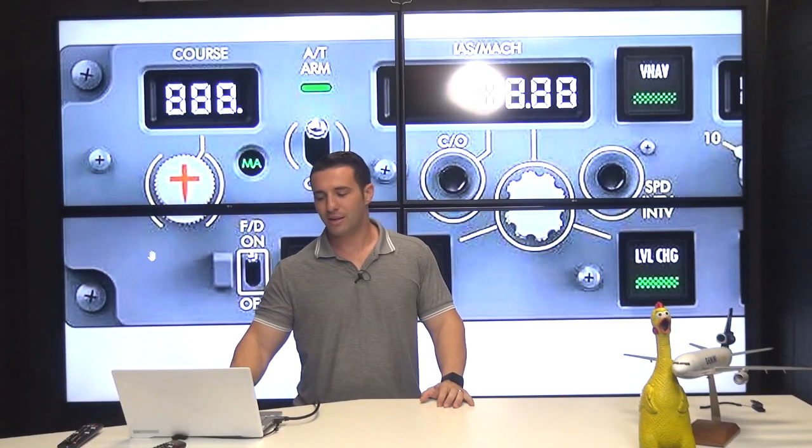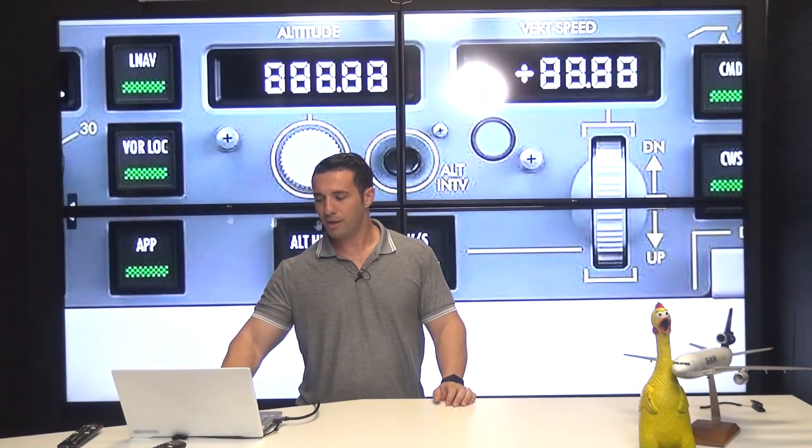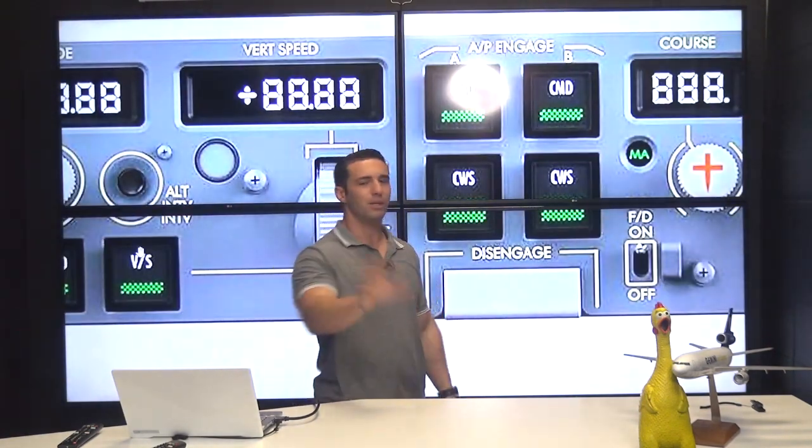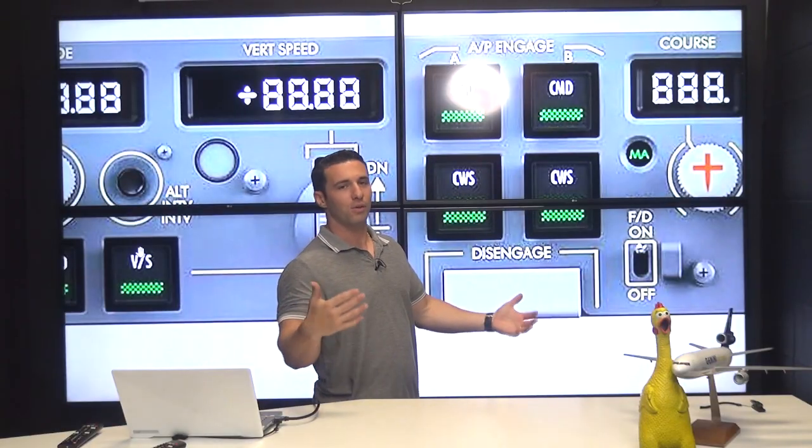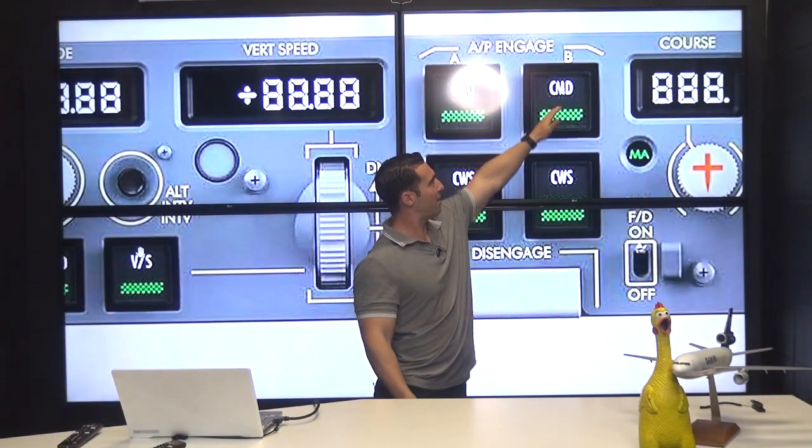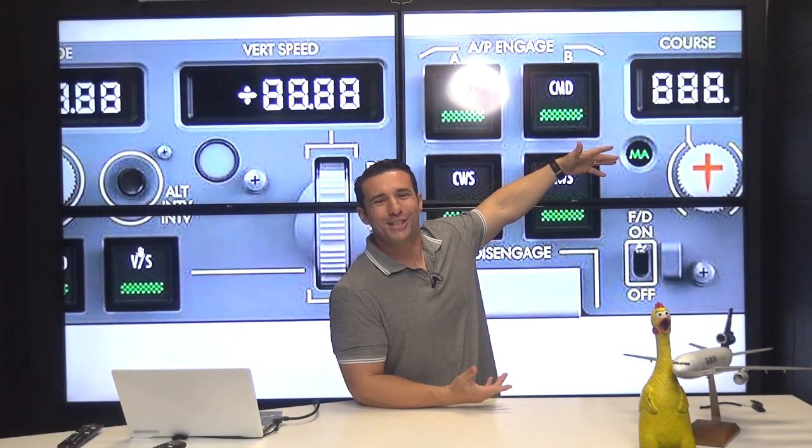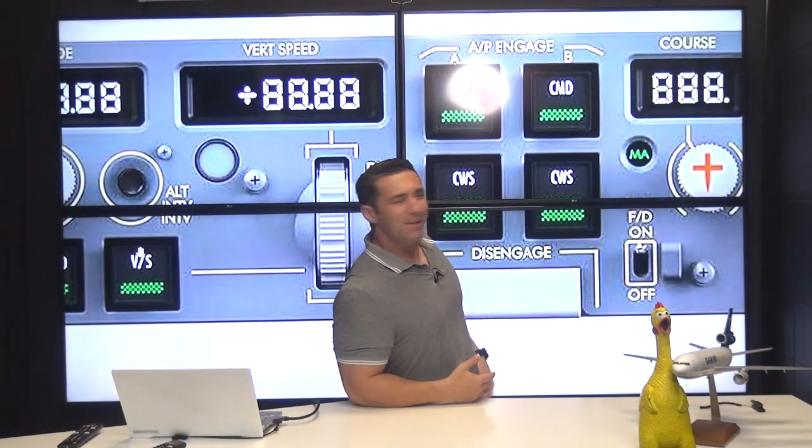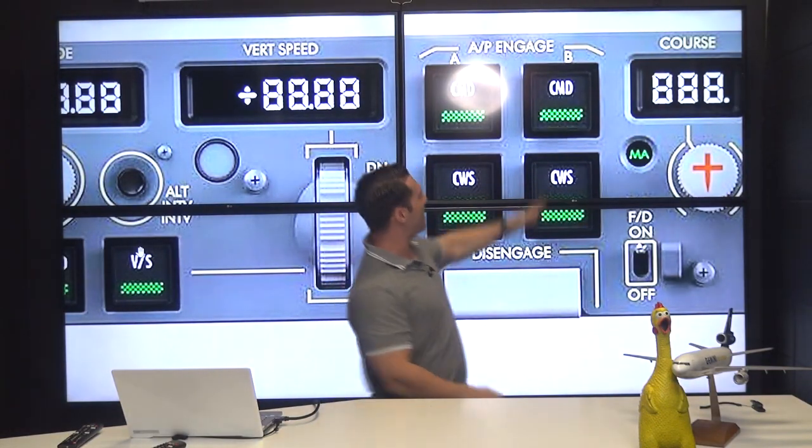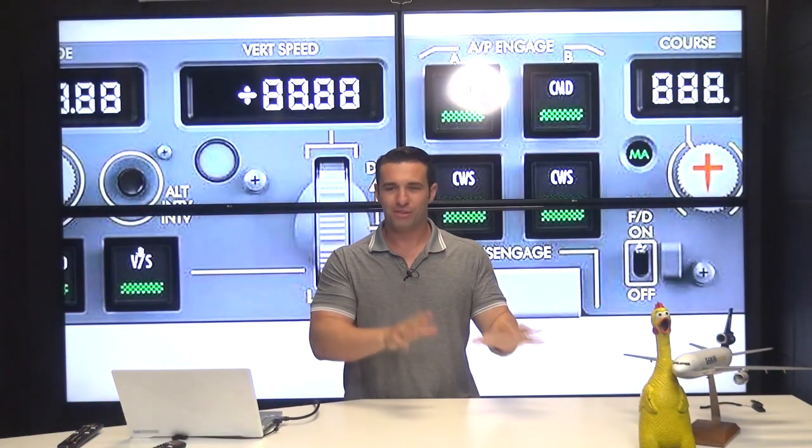So for example, if the captain turns on his or her master flight director first, the flight director button comes on first, right? But then we come over here, we slide across the mode control panel and we turn on command B. Now, typically you wouldn't do that. Usually you're going to use the side that you're on, so Captain Command A, FO Command B. But let's say the captain decided to put command B because he was feeling big or she was feeling like nice and big with the four stripes. So they want to put command B on, okay? So they put on B and all of a sudden the flight director switches to the first officer's side, the master flight director.